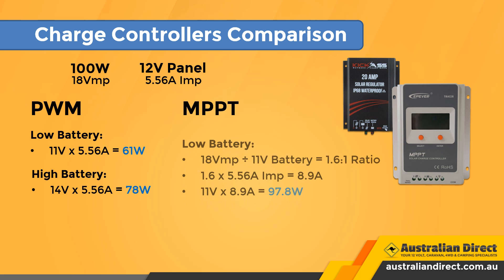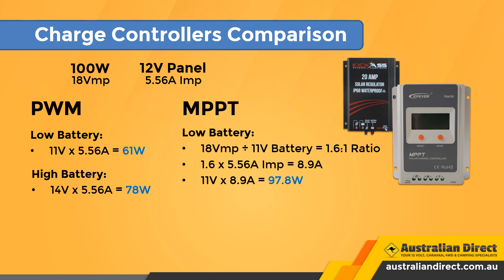Now let's do the math with an MPPT charge controller. When the battery is low, it drops the voltage from 18 volts down to 11 volts — a ratio of 1.6 (18 volts divided by 11 volts). So when it drops the volts by 1.6 to keep power constant, it increases the current by 1.6 as well, raising the current from 5.56 amps to 8.9 amps. 11 volts times 8.9 amps equals 97 watts — compare that with a PWM output of only 61 watts.